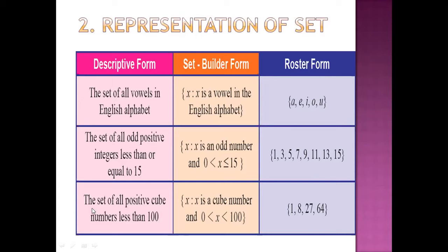Similarly, another example: the set of all positive cube numbers less than 100. In set builder form, we write X such that X is a cube, and the condition is X greater than 0 and less than 100.